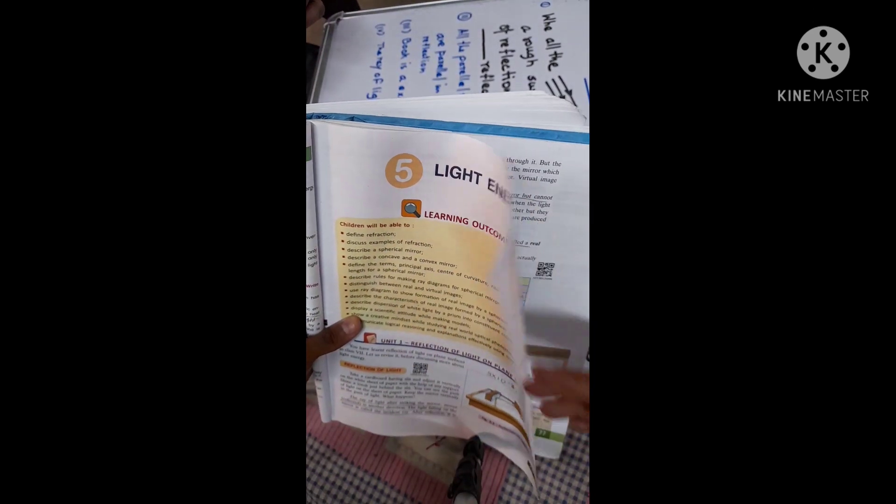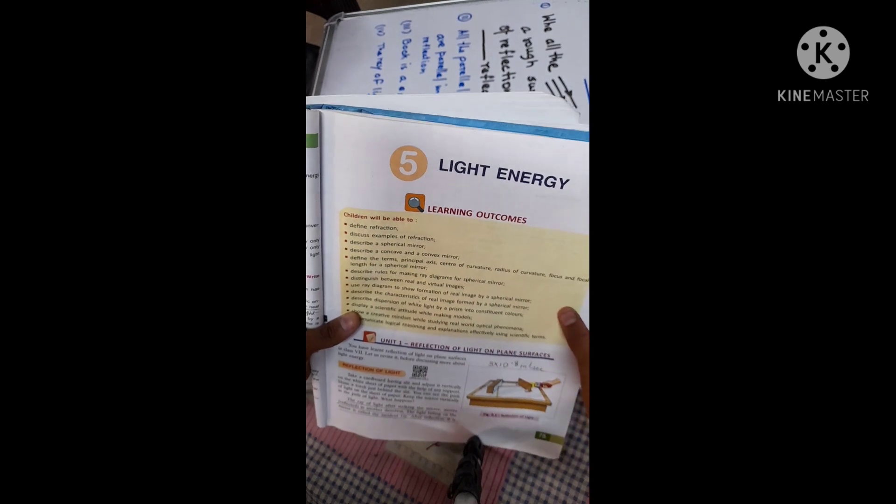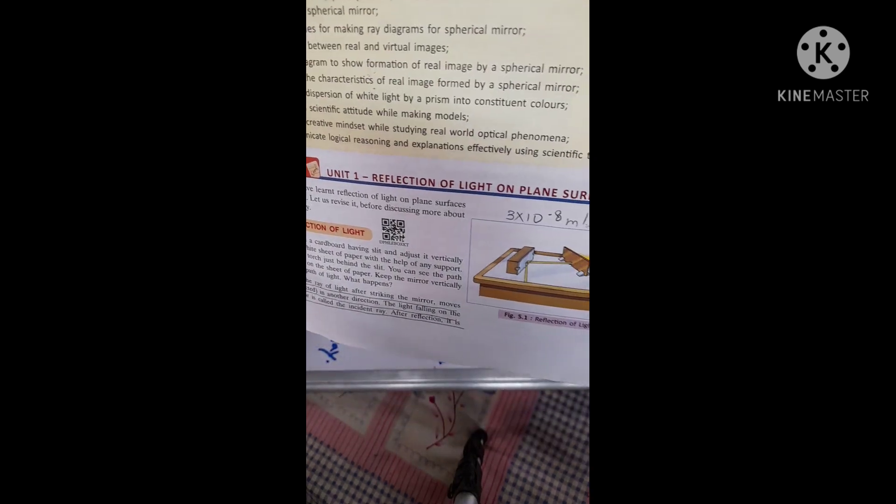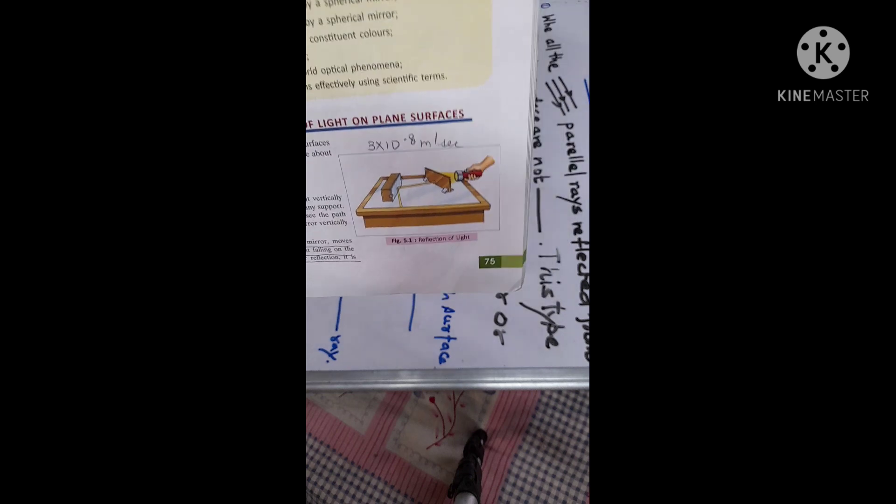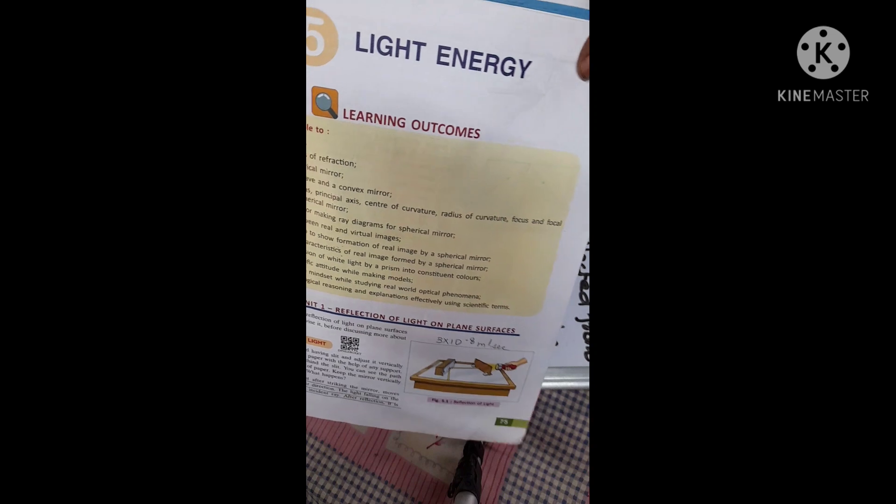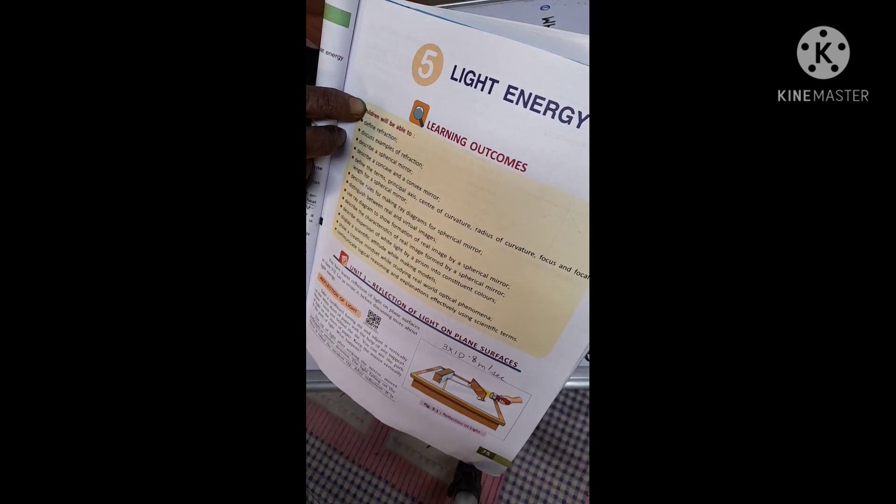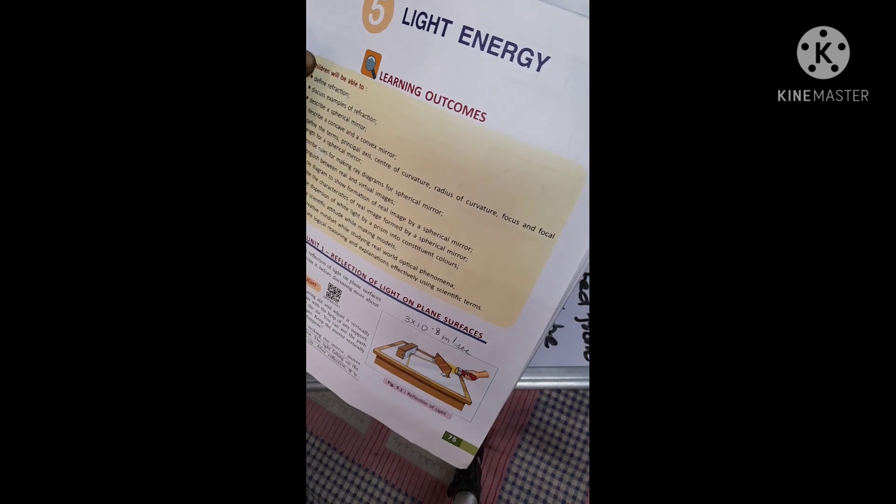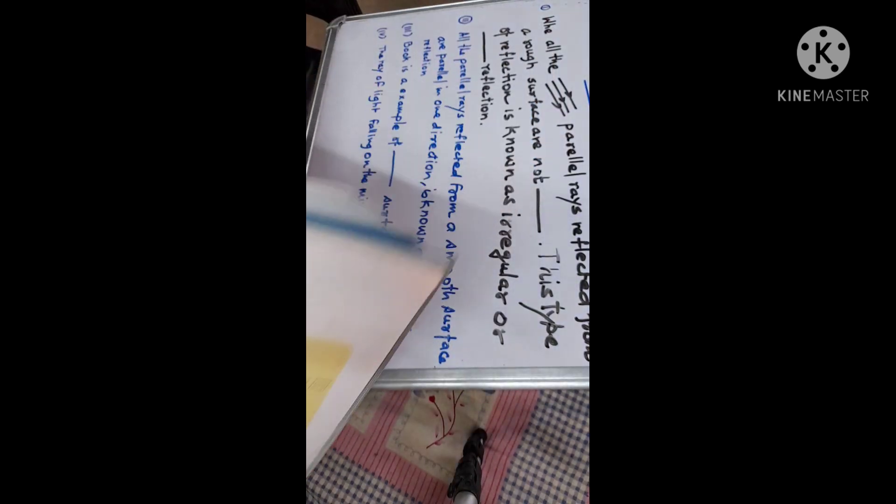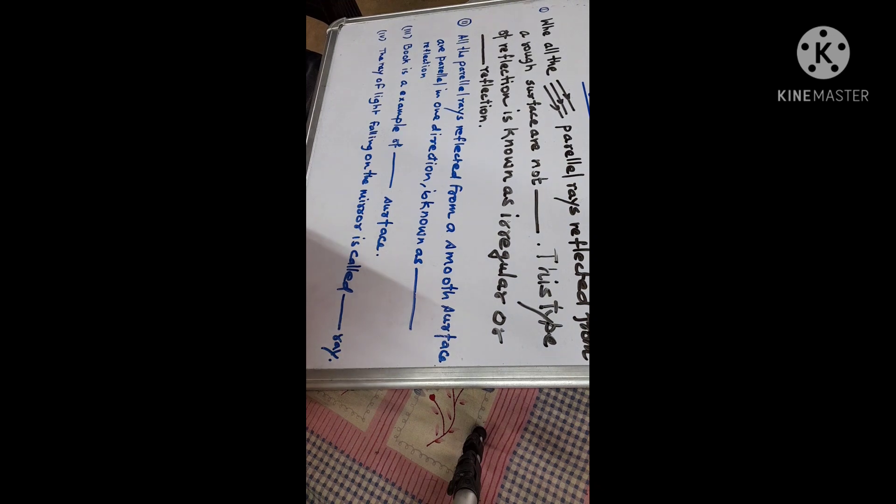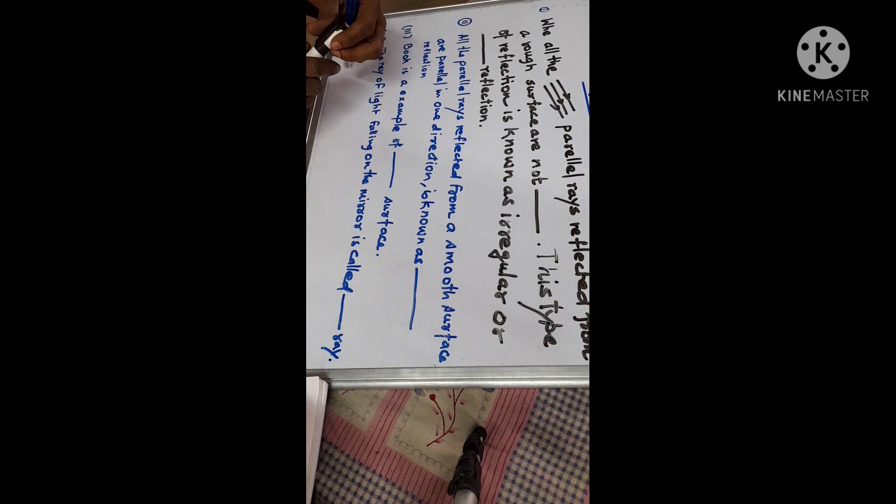Hello guys, very good morning. We are here to discuss the chapter of physics and science and the chapter's name is Light Energy Learning Outcomes. Light is a form of energy which enables us to see any object.